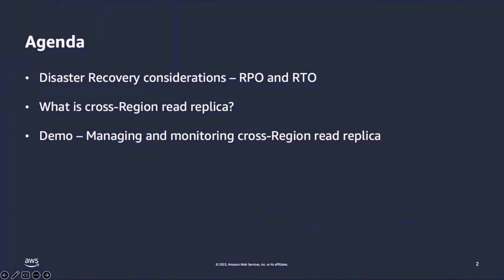Let's go through the agenda. We'll start with disaster recovery considerations. I will discuss the RPO and RTO that you can achieve with different DR options, and then I'll talk about cross-region read replica and share some best practices to implement and monitor the read replica. I also have a demo at the end to show the implementation in my AWS account.